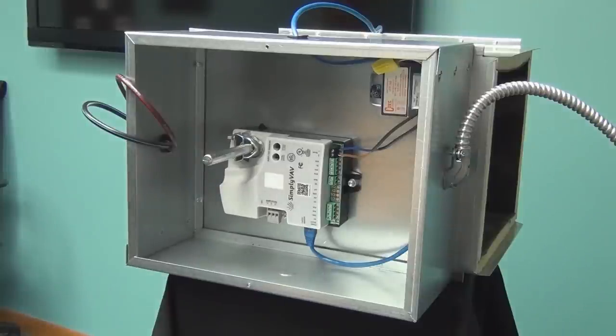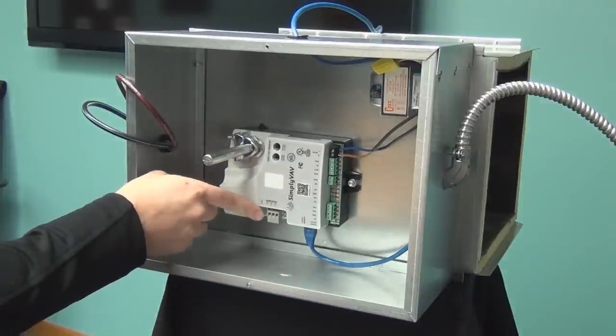If the controller is being integrated into a BACnet network, network wiring should connect to the gray removable terminal block.